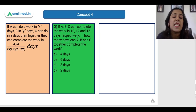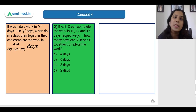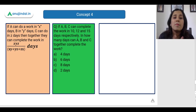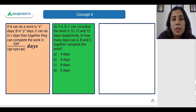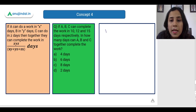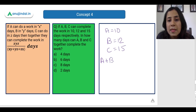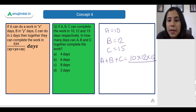In this example, A takes 10 days, B takes 12 days, and C takes 15 days. For A, B, and C working together, we compute: (10 × 12 × 15) / (10 × 12 + 12 × 15 + 10 × 15). The denominator is 120 + 180 + 150.